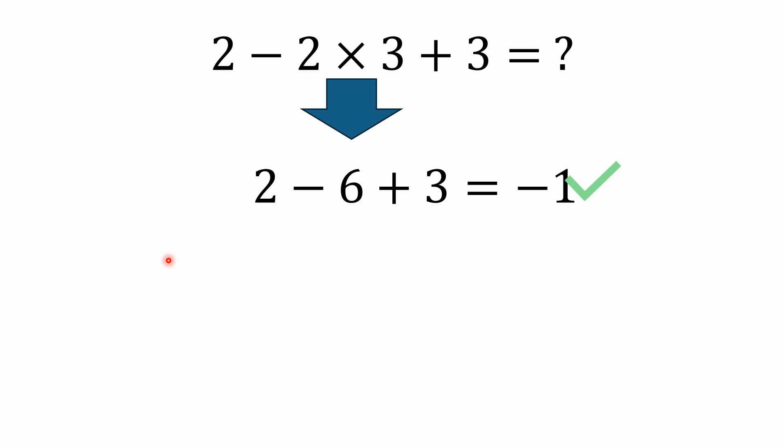Basically your multiplication is shorthand for repeated addition, so we need to resolve that multiplication first. And of course 2 times 3 is 6. 2 minus 6 is negative 4. Negative 4 plus 3 is negative 1. So the answer is negative 1.